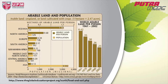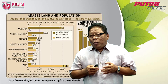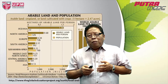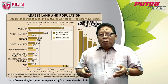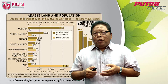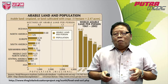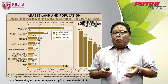From 0.42 hectares per person, it went to 0.35, then 0.30, then 0.26, then 0.23, and now it is less than 0.2. What this means is that over time, because of population growth, each person in this world has less land available for the production of food.